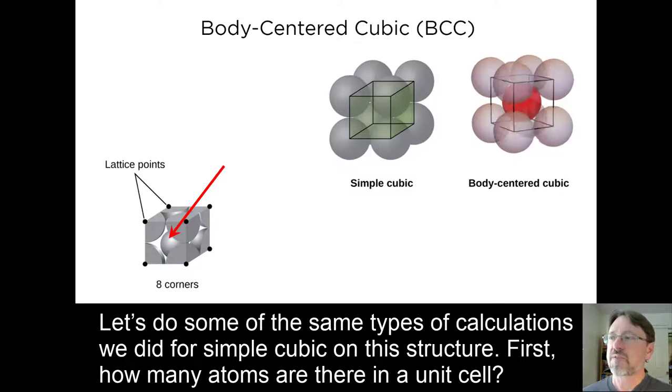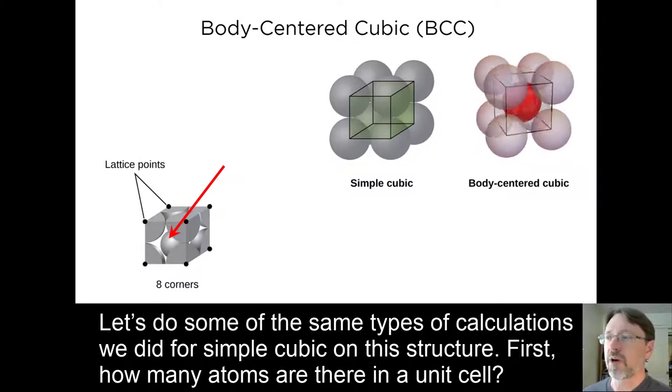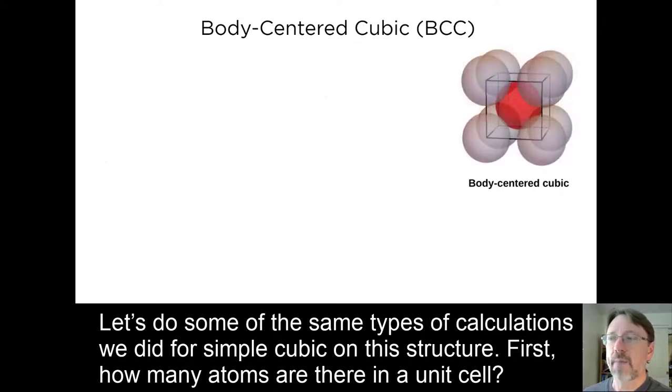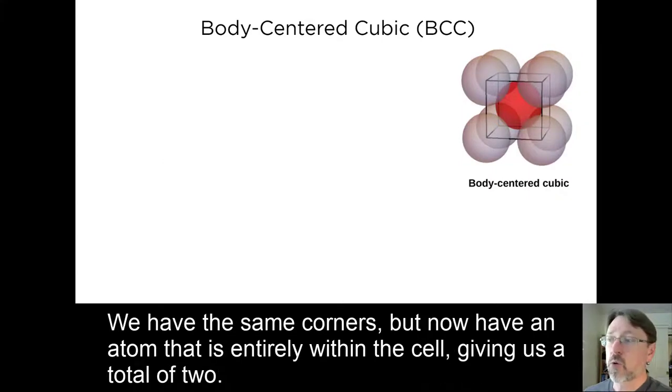Let's do some of the same types of calculations we did for simple cubic on this structure. First, how many atoms are there in a unit cell? Well, we have the same corners, but now we have an atom that is entirely within the cell, giving us a total of 2.